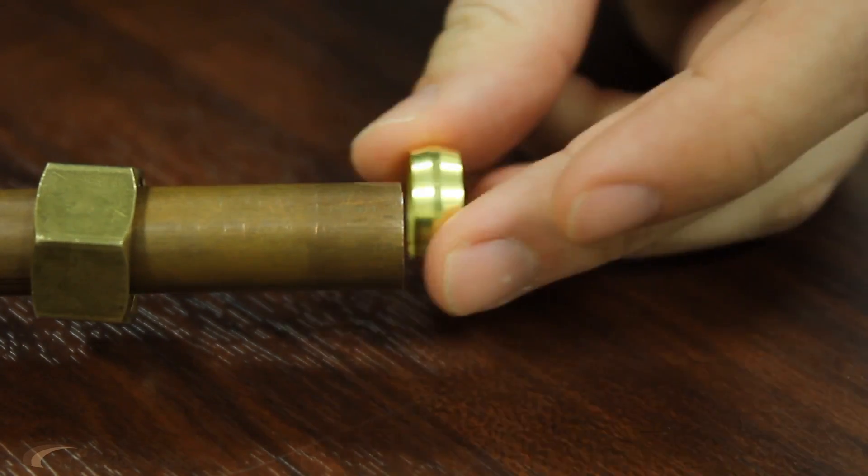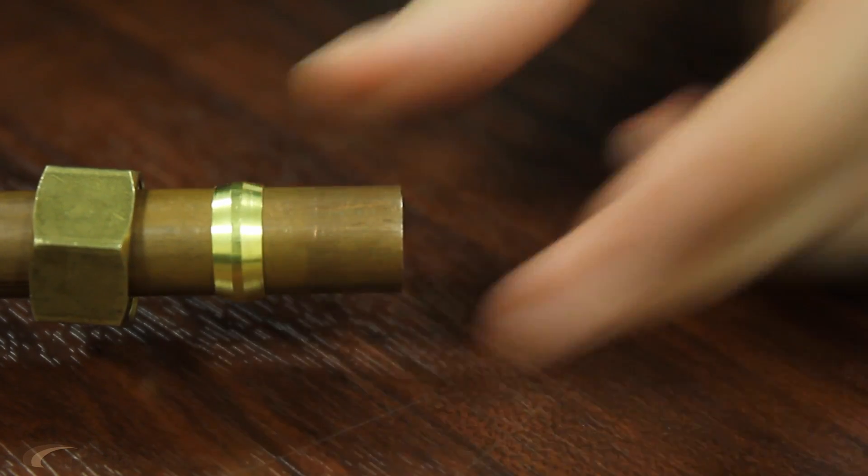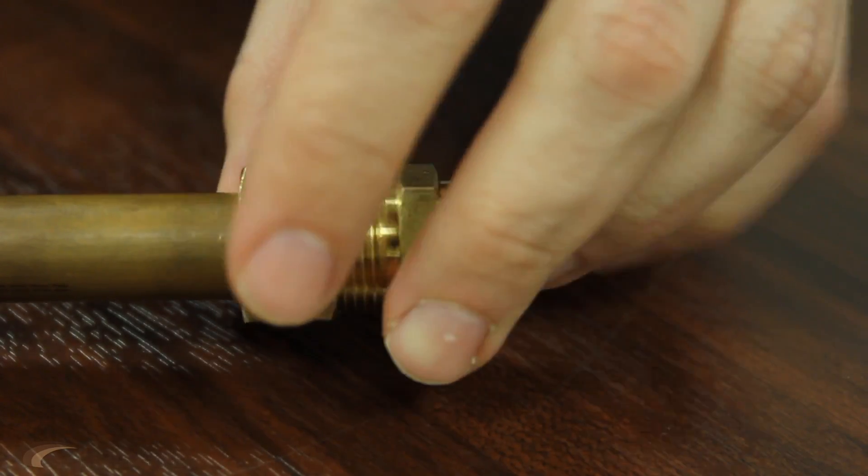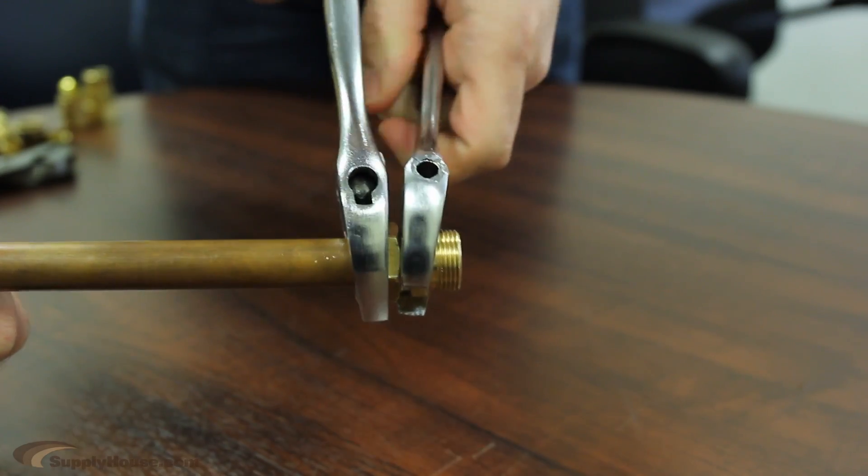First, slide the nut onto the pipe, then the ring, and then the body. You can use Teflon tape on the threads, but it is not needed. Hand tighten the nut onto the body, then use a wrench to make the connection secure.